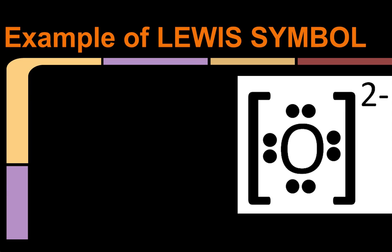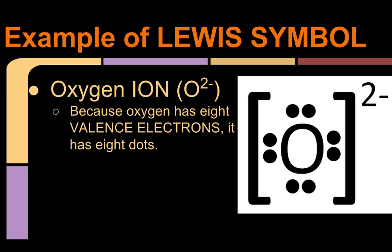Now what happens if oxygen was an ion, an O²⁻ ion? Well, what you do here, because it has eight valence electrons, this oxygen ion has eight valence electrons, you just do the same rule, one, two, three, four, five, six, seven, eight. And now you have the filled octet, so now you know that this oxygen is more stable because it has that eight electrons that it wants.